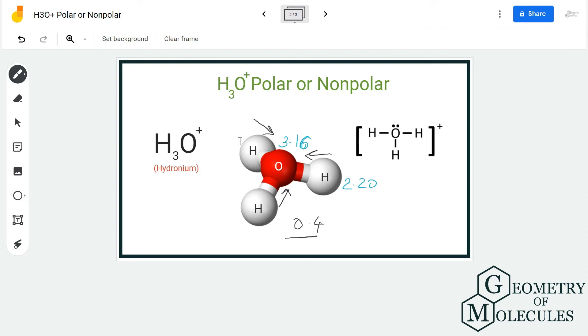And as it is not a symmetric molecule, as you can see, these dipole moments will not be cancelled. So instead of getting nullified, they will be summed up. So as there is a net dipole moment in this molecule, there will be formation of poles in this molecule.